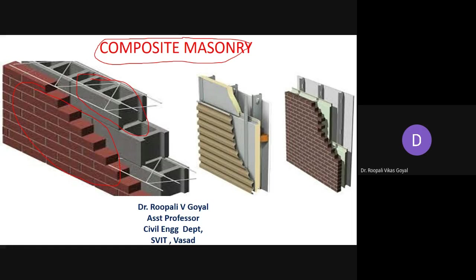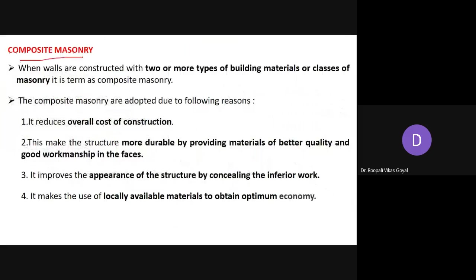Composite masonry can be defined as: when walls are constructed with two or more types of building materials or classes of masonry, it is termed as composite masonry. Simply, it is the combination of two types of building material or two types of masonry, and generally this combination is brick work with stone work or brick work with concrete work.